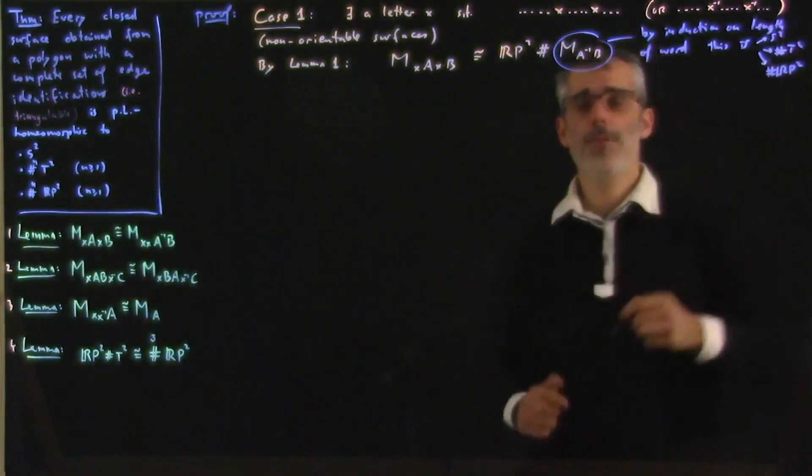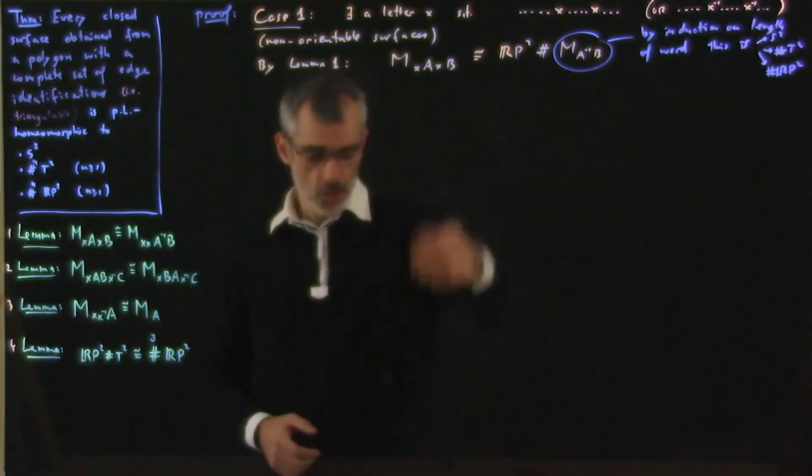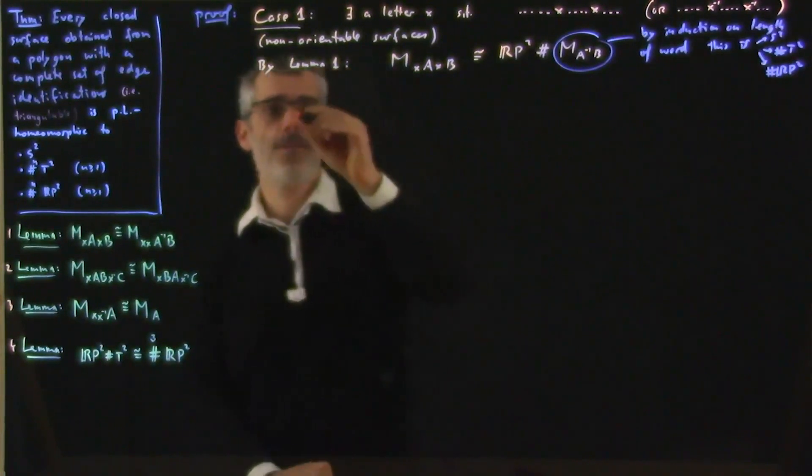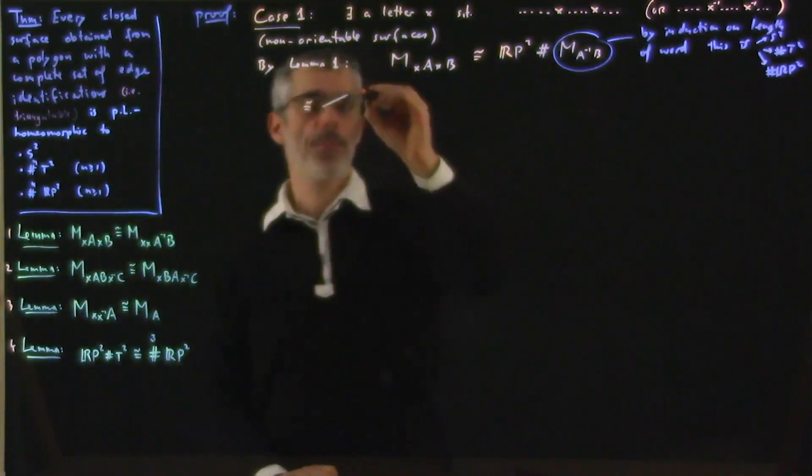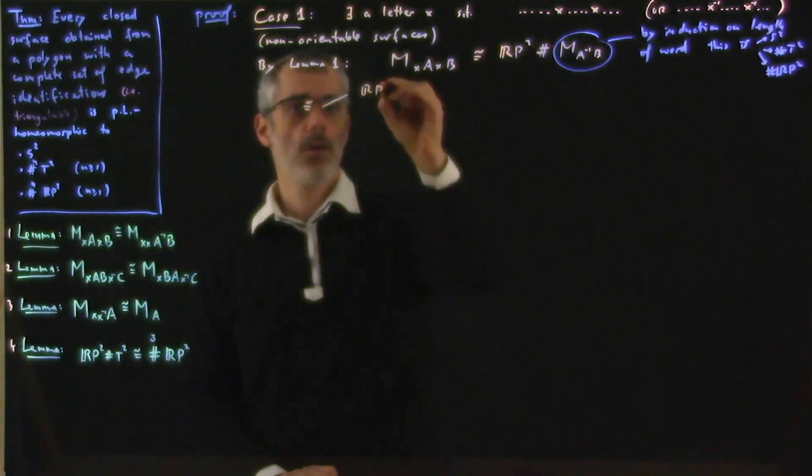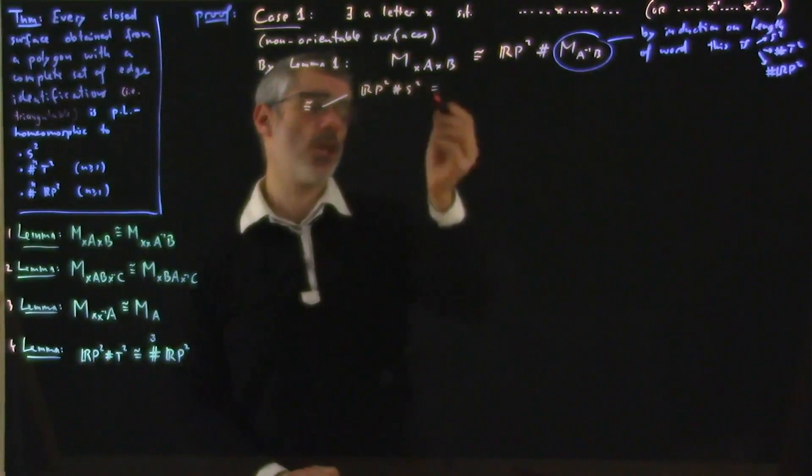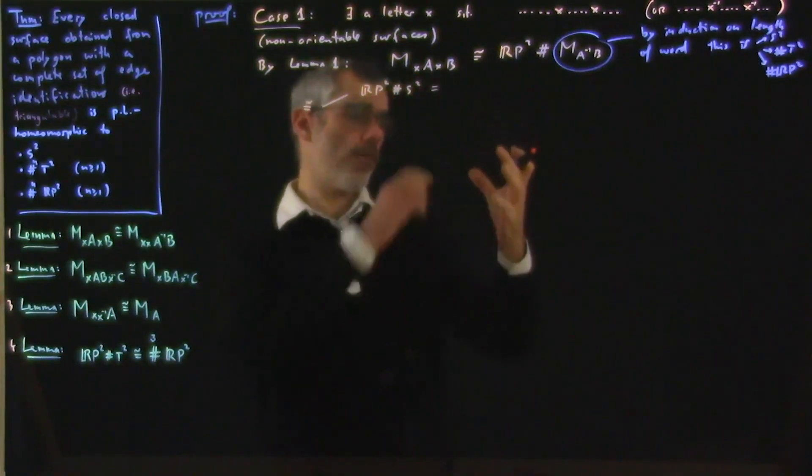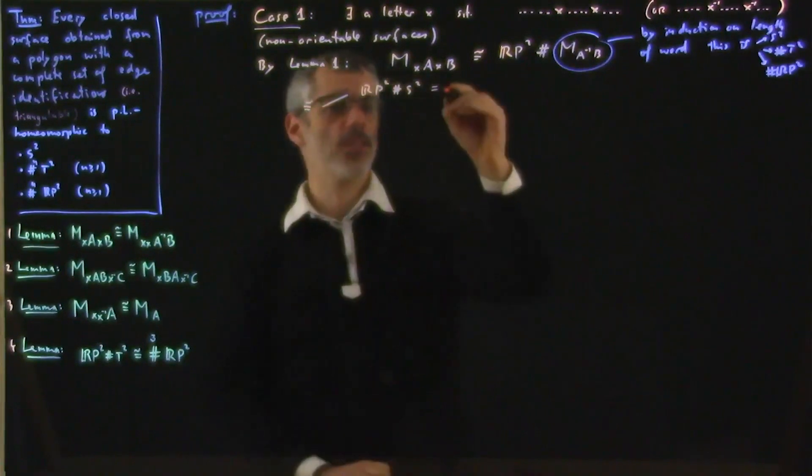So we have three subcases. And we get that our surface is homeomorphic to either S^2, so RP^2 connect sum S^2, but connect sum S^2 does nothing. Because if S^2, I remove a disk, then I just have a disk, and then you're doing nothing. So that's just RP^2.